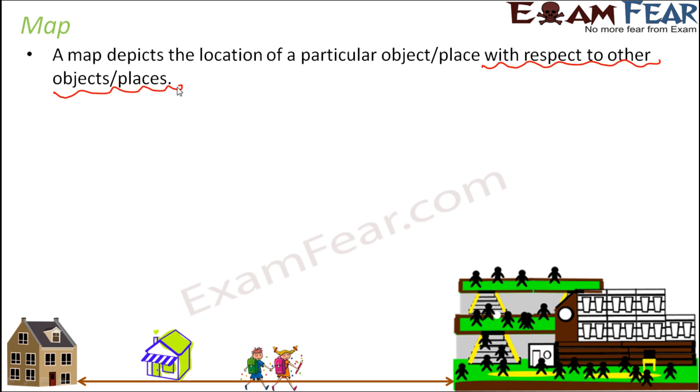Here again in the same example, if you see, this is your home, this is your school and this is the market. How have I represented this? With the help of pictures. I have drawn the picture of a house, a picture of a school, a picture of a market.